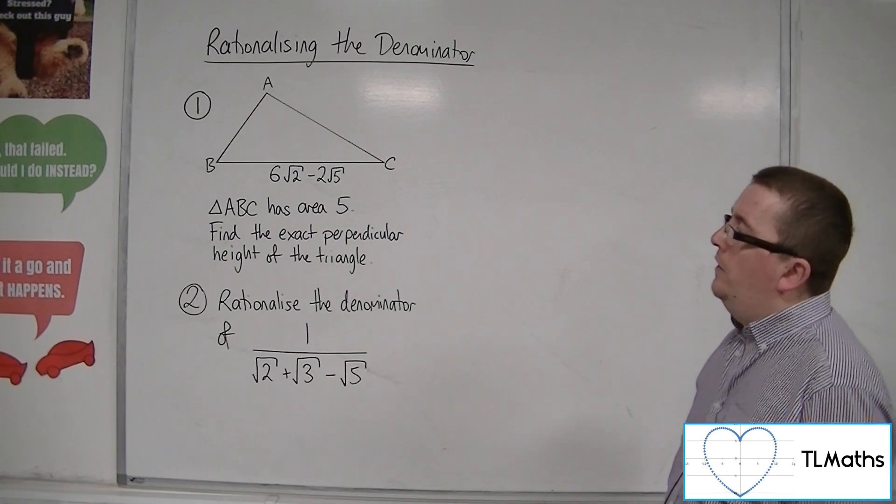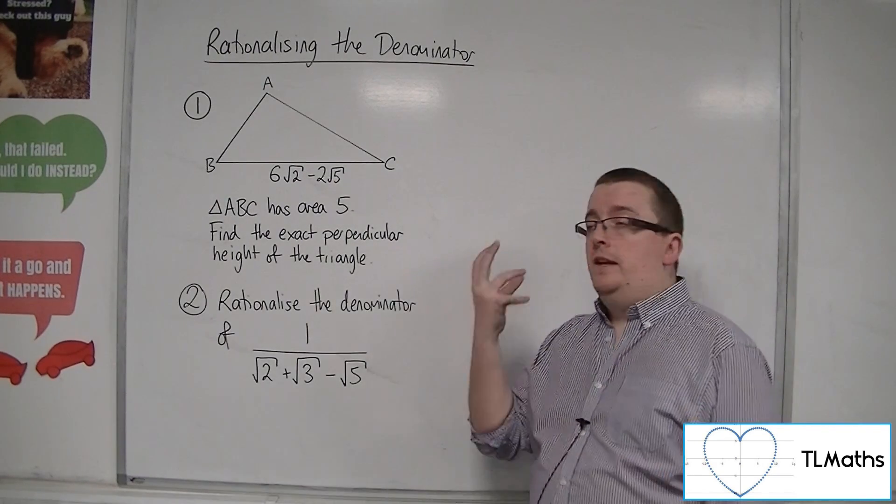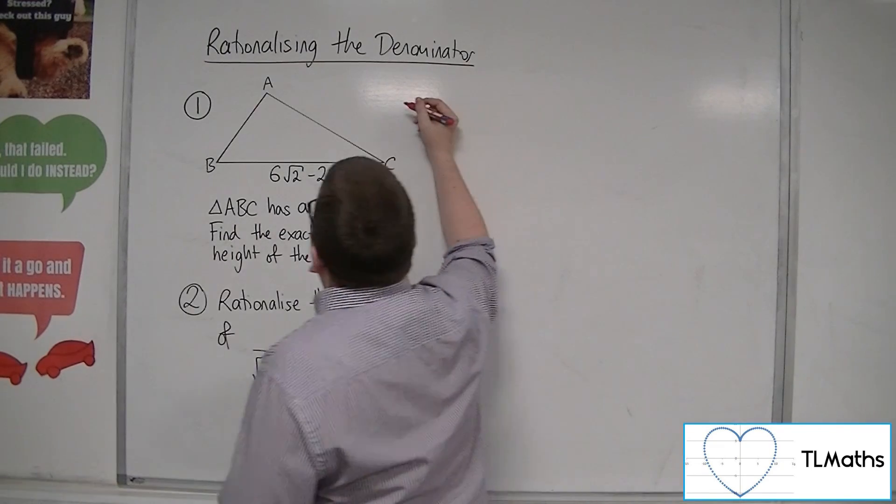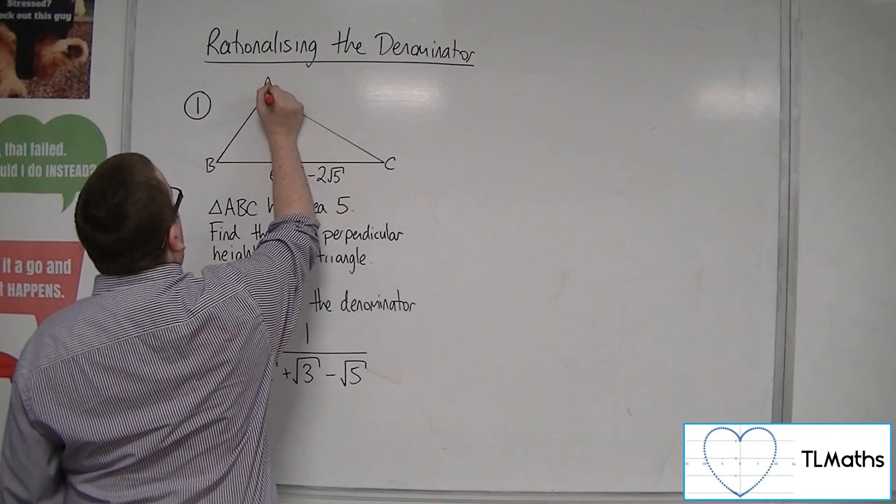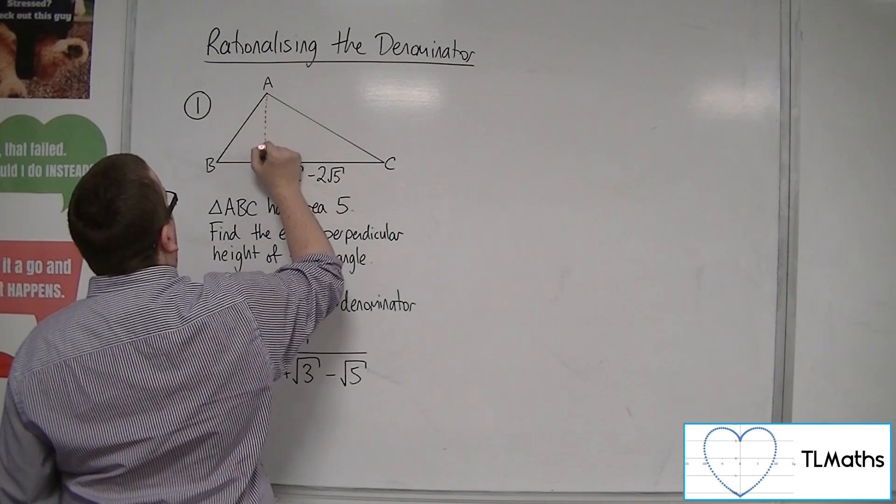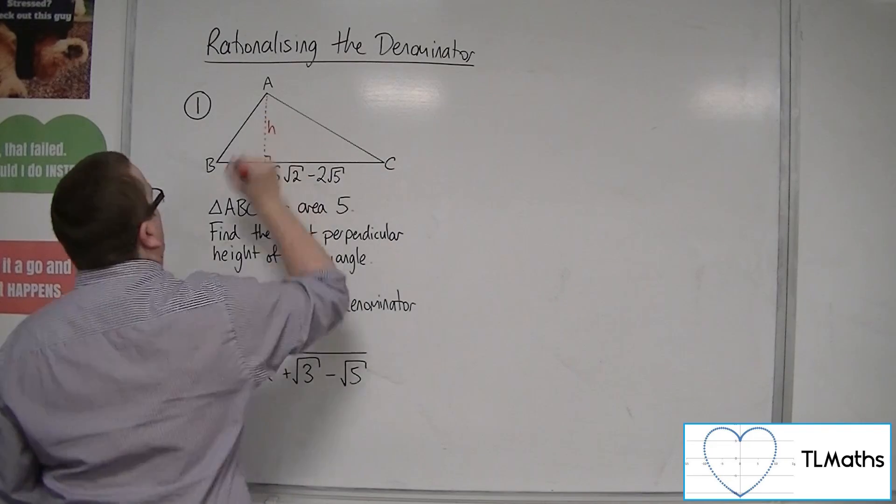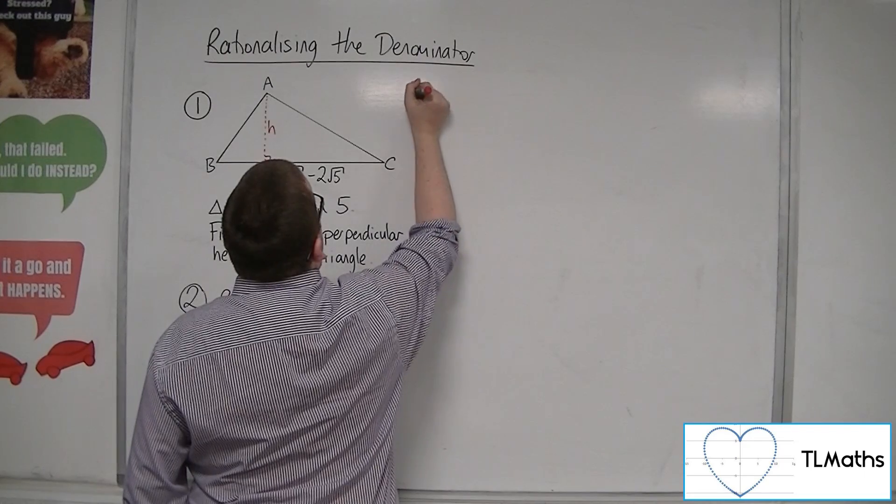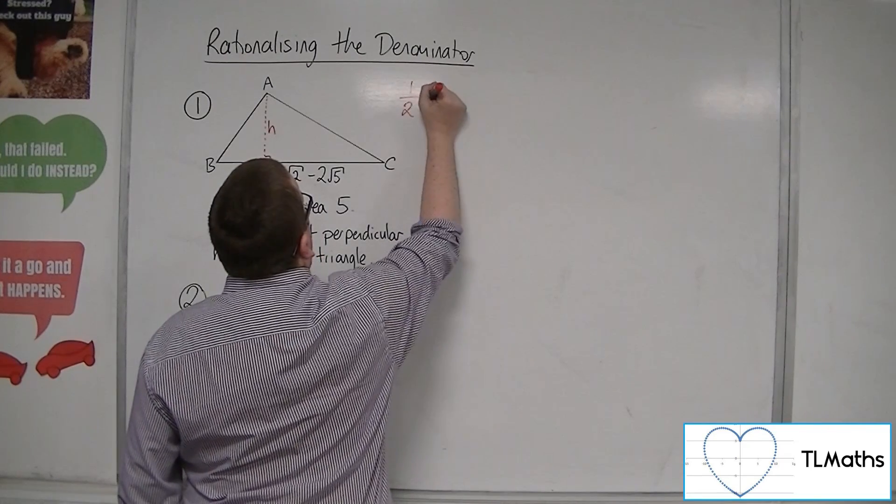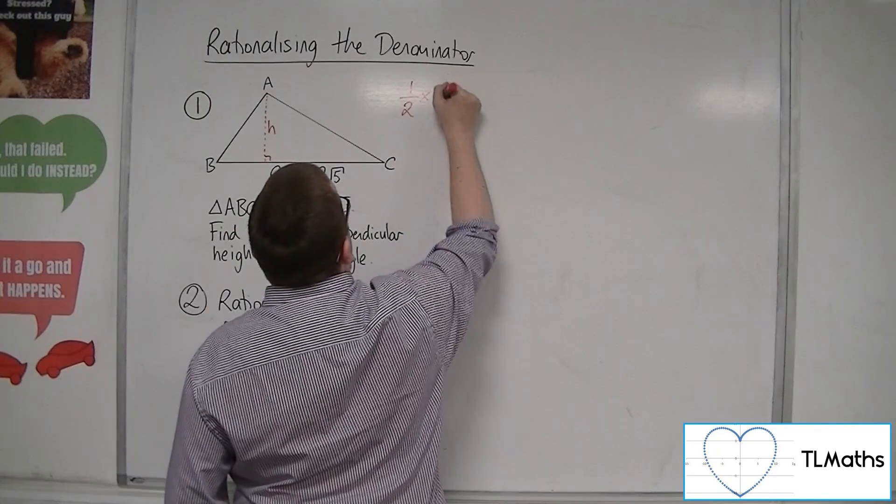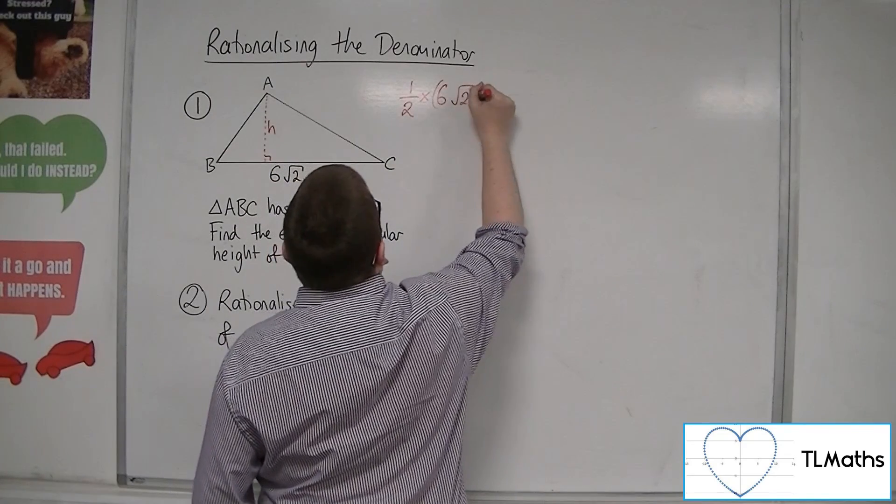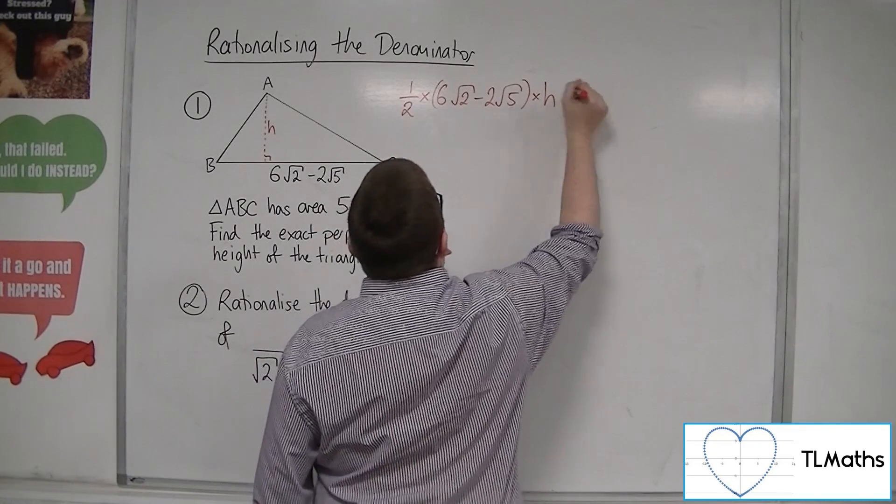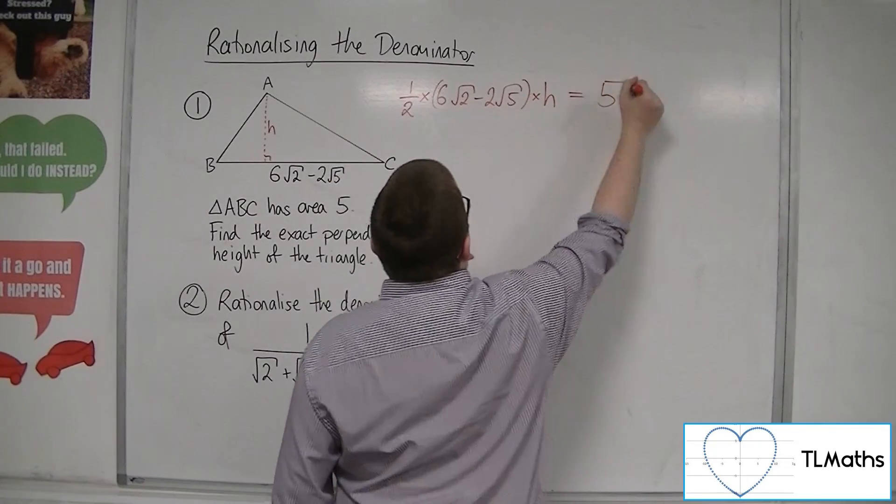So the area of a triangle is half its base times by its height. So if we say that its perpendicular height, which is that length there, let's call that h. So we would be saying that one half times the base 6 root 2 take away 2 root 5 times by the height must be equal to its area 5.